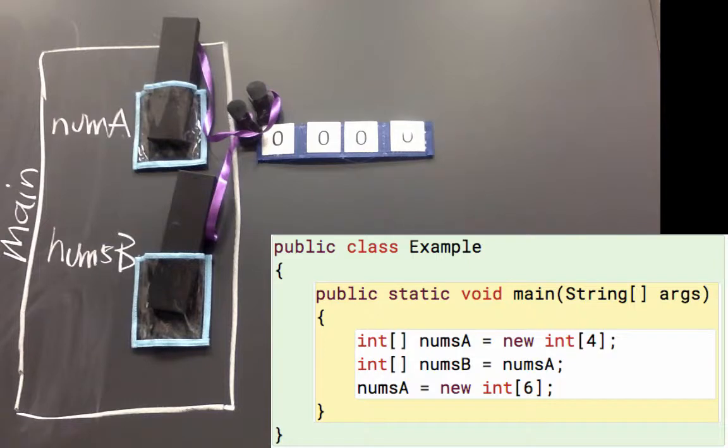The next line says numsA gets new int array six. So we were resetting numsA with this assignment statement, and when we're resetting a variable or using a variable, we don't list the type. We only list it the first time we create it. So we say numsA gets the value of a new int array with six elements.